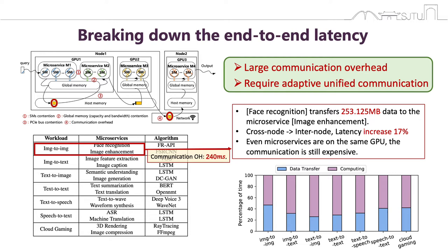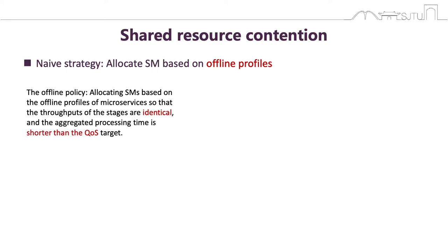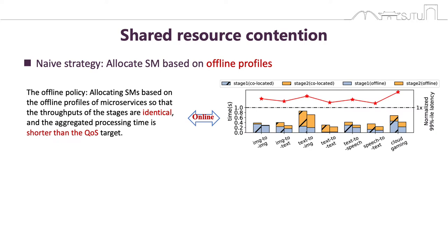Besides, the appropriate deployment of GPU microservices changes with different hardware and load of service, so a unified communication framework is required. The next problem is shared resource contention. A service achieves the highest throughput when stages have identical throughput due to the pipeline effect. An intuitive policy is carefully allocating SMs based on offline profiles so that throughputs of stages are identical and the aggregated processing time is shorter than the QoS target. However, this offline policy often results in QoS violation, as the actual processing time of stages is longer than the offline time, and all benchmarks suffer from QoS violation.